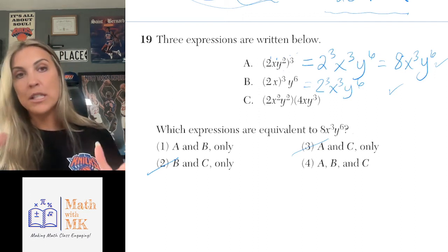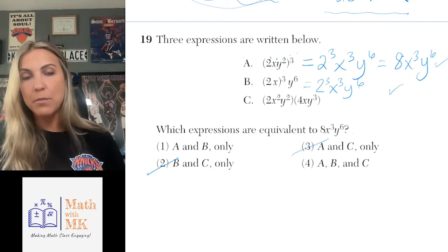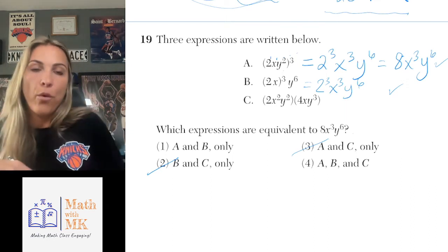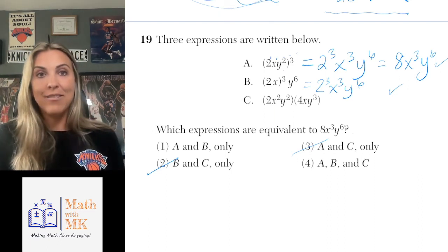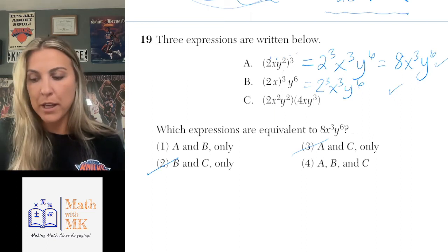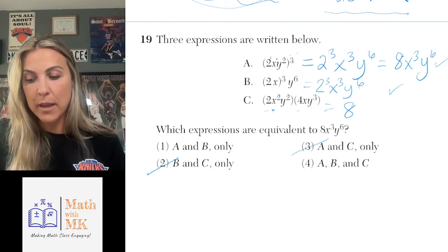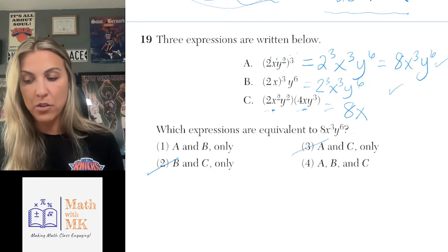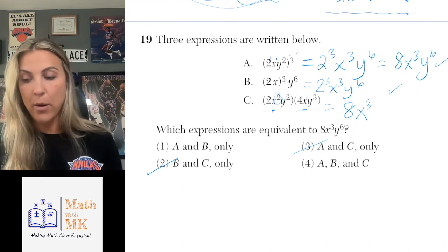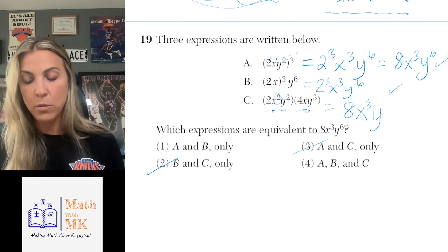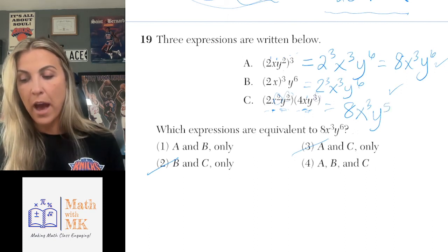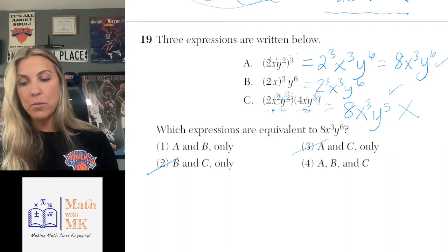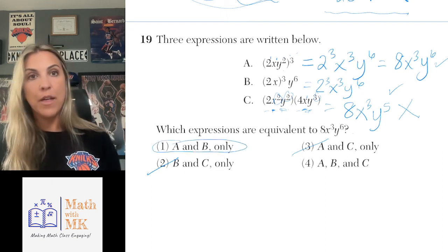For choice C, I have two expressions being multiplied — the exponents are not outside parentheses this time. When multiplying with the same base, keep the base and add the exponents. Coefficients: 2 times 4 is 8. For x: x squared times x — add exponents 2 plus 1 — gives x to the third. For y: y squared times y cubed — add exponents 2 plus 3 — gives y to the fifth. So C is equivalent to 8x cubed y to the fifth, not y to the sixth. Only A and B are equivalent, so the answer is choice 1.